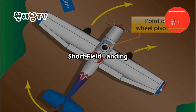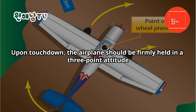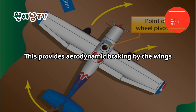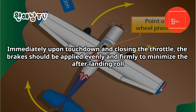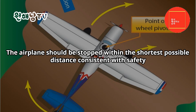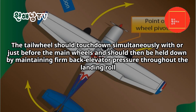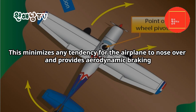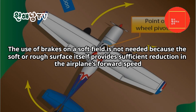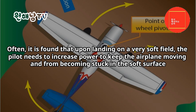Short field landing: upon touchdown the airplane should be firmly held in a three-point attitude, providing aerodynamic braking by the wings. Immediately upon touchdown and closing the throttle, brakes should be applied evenly and firmly to minimize the after-landing roll, stopping within the shortest possible distance consistent with safety. Soft field landing: the tailwheel should touchdown simultaneously with or just before the main wheels and should then be held down by maintaining firm back elevator pressure throughout the landing roll, minimizing any tendency to nose over and providing aerodynamic braking. Brakes are not needed on a soft field as the surface itself provides sufficient reduction in forward speed. Often upon landing on a very soft field the pilot needs to increase power to keep the airplane moving and prevent it from becoming stuck.